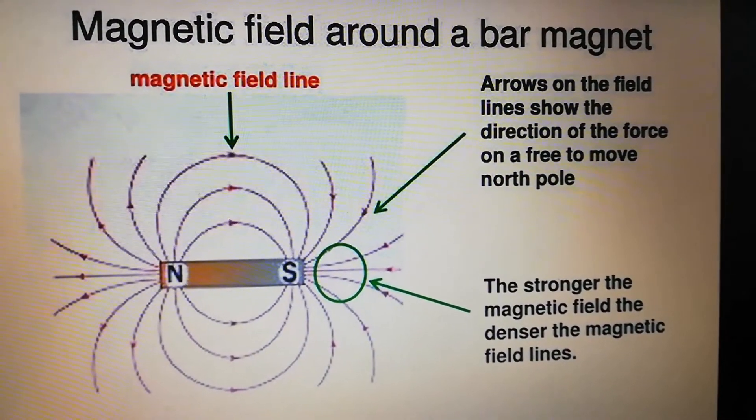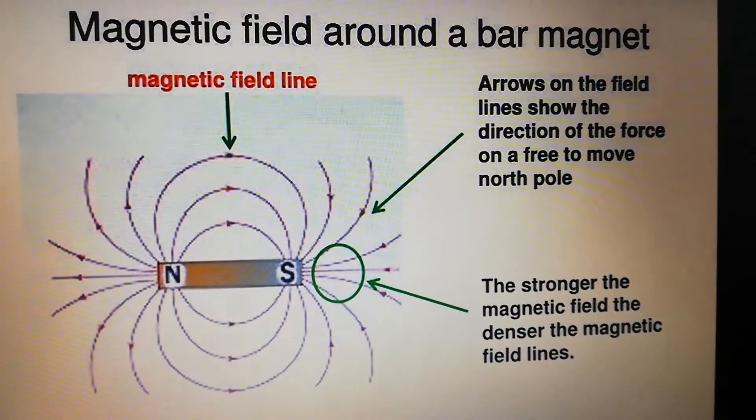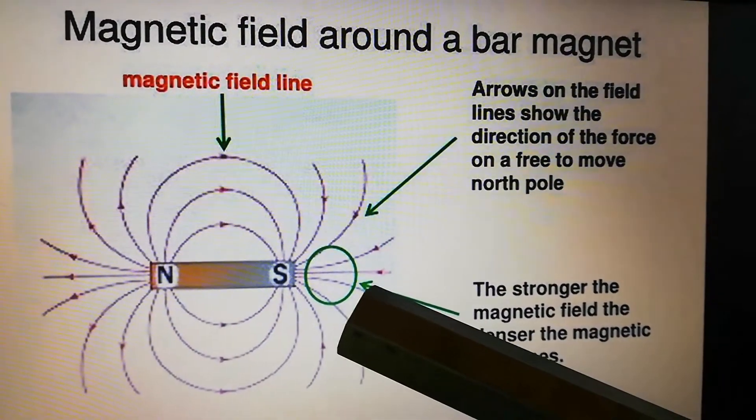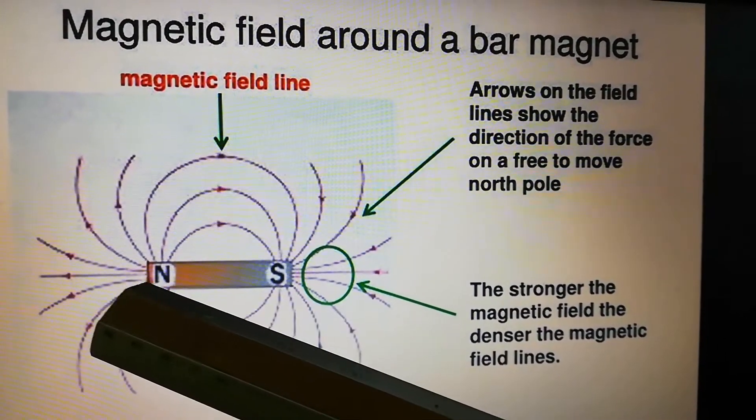Inside the bar magnet, the direction of the magnetic field is from south to north.